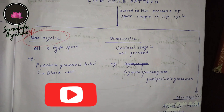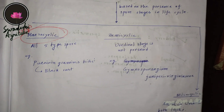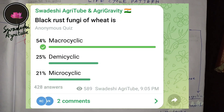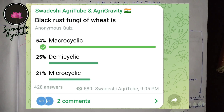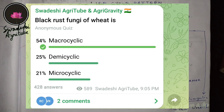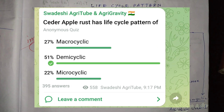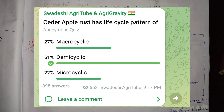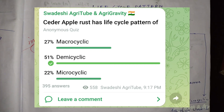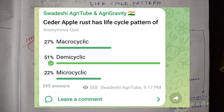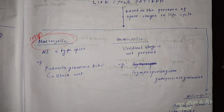Sapko Namaskar. In Telegram, I organize a daily quiz at 9 p.m. One day, regarding the plant pathology quiz, I asked two questions. The first question was: does the black rust of wheat show a macrocyclic, demicyclic, or microcyclic life cycle? The answer is macrocyclic. The second question was: does the cedar apple rust fungus show a macrocyclic, demicyclic, or microcyclic life cycle? The answer is demicyclic. Many have asked what macrocyclic, demicyclic, and microcyclic mean.